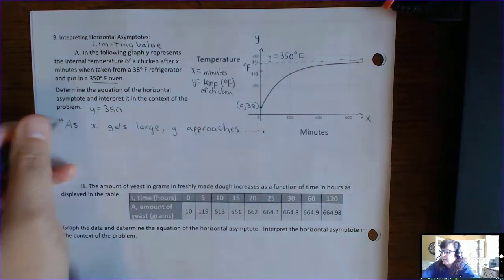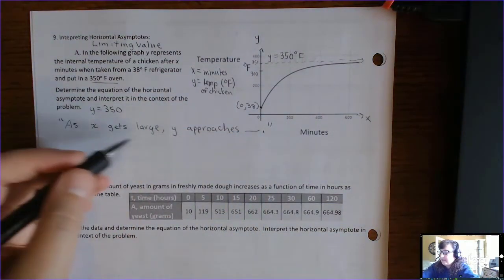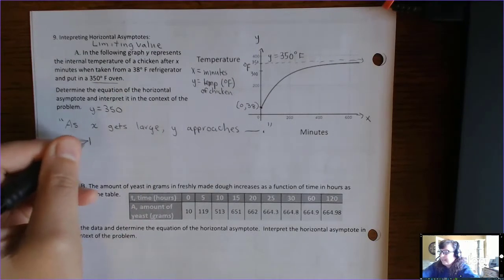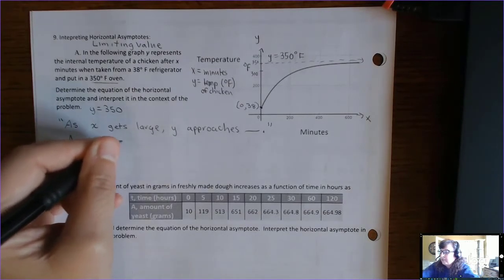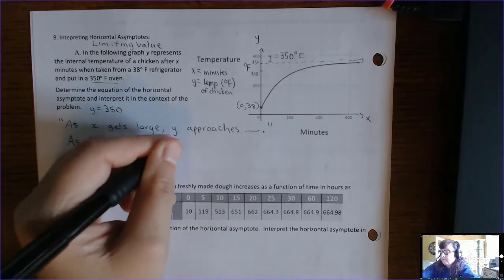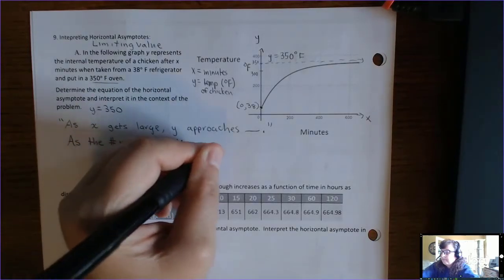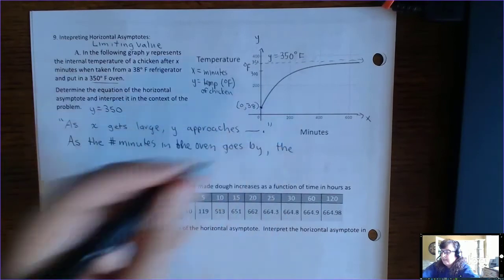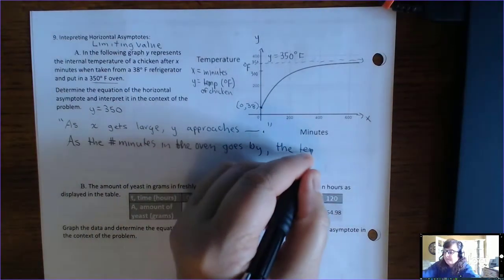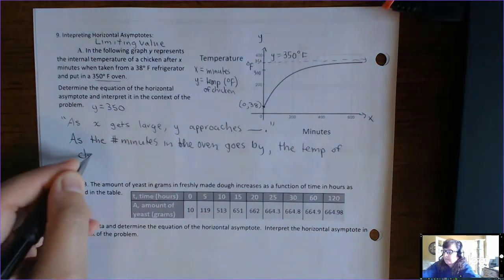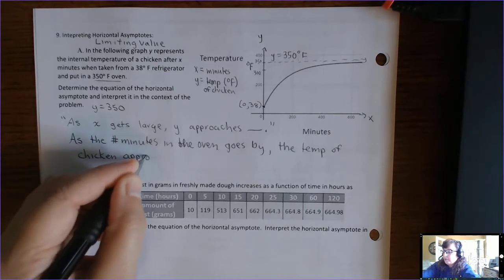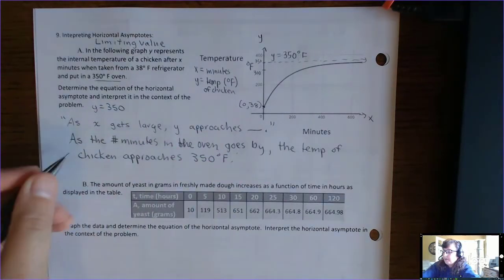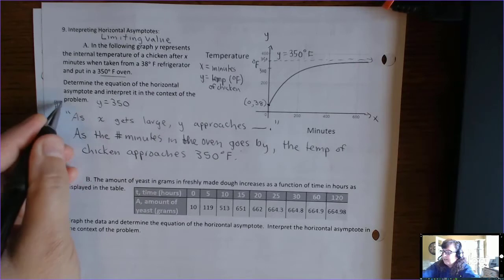Here is the template: 'As x gets large, y approaches whatever the number is.' Any x or y in the template you need to replace with the actual units. So the real interpretation is: as the number of minutes in the oven goes by, the temperature of the chicken approaches 350 degrees Fahrenheit.